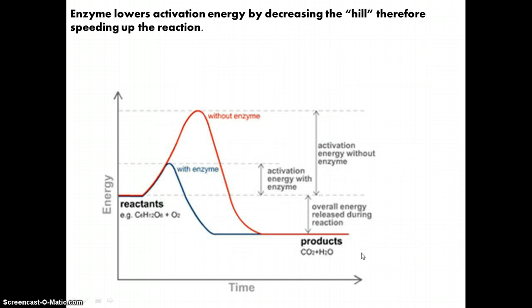So graphically, we depict enzyme lowering activation energy by this. So here's a graph. You have time, energy, and this hill you see up here is activation energy. So notice how that peak is lowered with the enzyme. And as you can see, the product is lower in energy versus reactant, and basically that energy is released. So we could say this energy is released, and this reaction is exergonic.